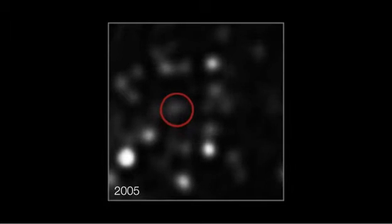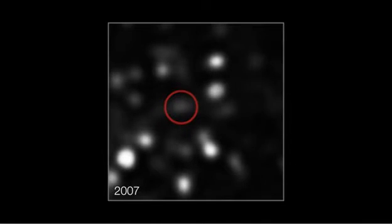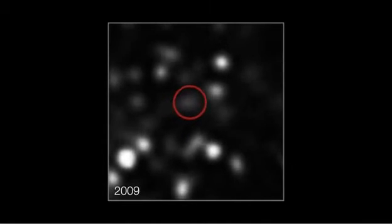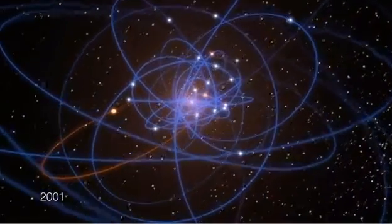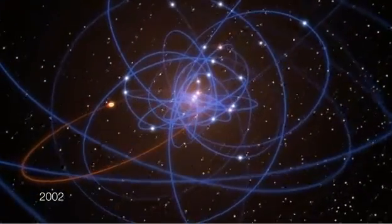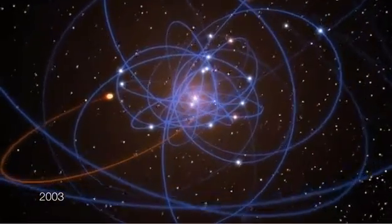As the astronomers watched, the cloud has been picking up pace as it gets closer to the giant black hole. Its speed has doubled in the last seven years and it is now speeding towards the black hole at more than 8 million kilometres per hour.